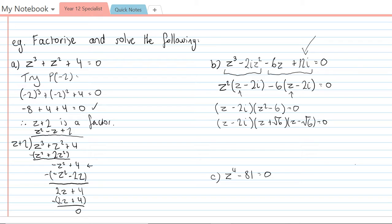And so that's completely factorised now and so I can say therefore z is equal to 2i and z is equal to plus or minus root 6, just using the null factor law.